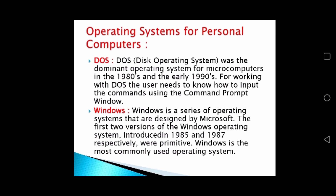The next operating system is Windows. Windows is a series of operating systems designed by Microsoft. The first two versions of the Windows operating system were introduced in 1985 and 1987 respectively and were primitive. Windows is the most commonly used operating system in the world, developed by Microsoft.